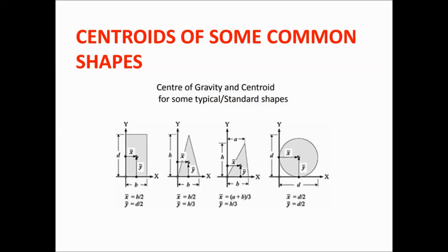And it will be h by three for unsymmetric triangle. It will give a centroid in x direction as a, that is the distance from y axis line to the top of the triangle.